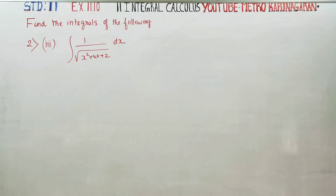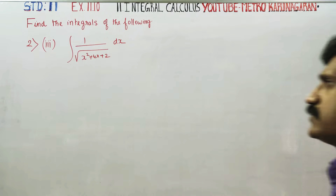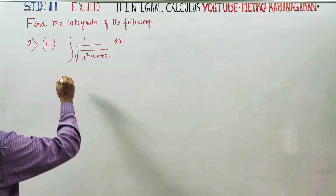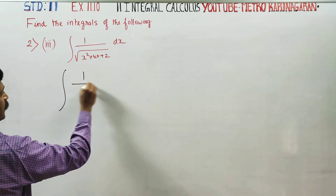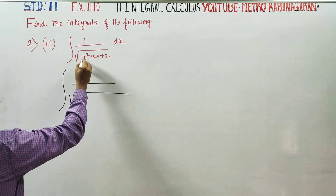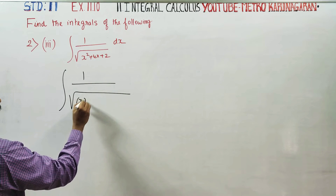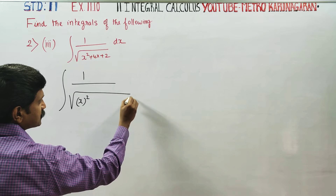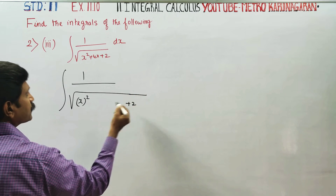Hello to old standard students. I am Metro Karanagaran. In Exercise number 3.10, sum number 2, third subdivision, you have to integrate this: integration of 1 by square root of x squared in the constant.